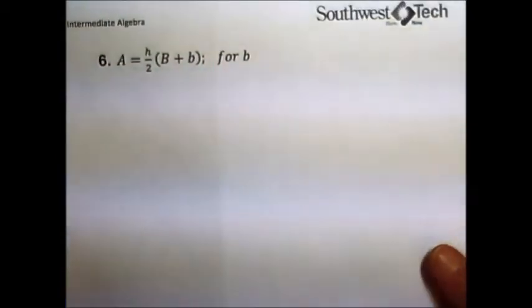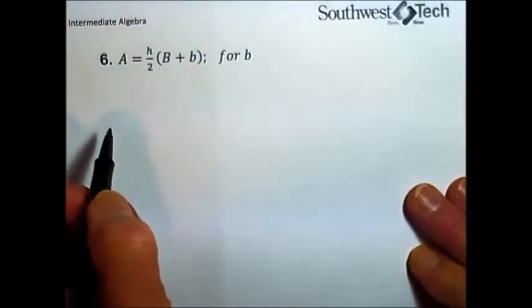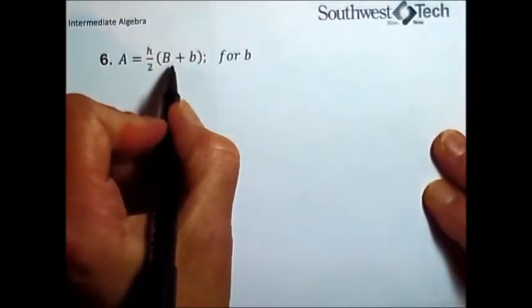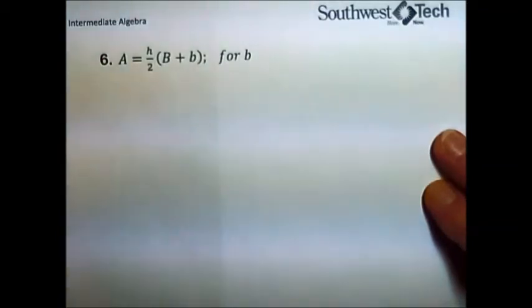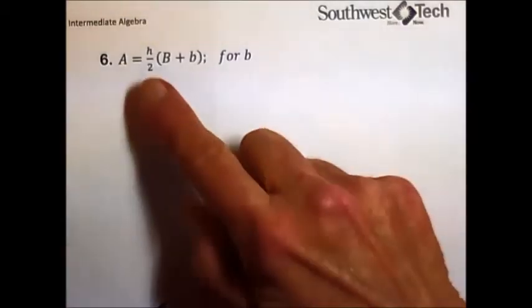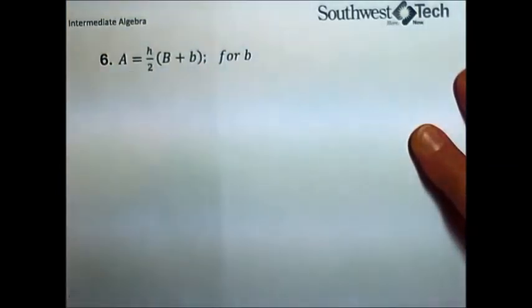The next problem I want to take a look at is this one. This is actually from geometry as well. It's the area of a trapezoid, and they're asking us to solve for b. In your order of operations, inside the parentheses is the first thing that we do, but when we're solving, it will be the last thing that we do. We essentially are working backwards through the order of operations. So I need to get rid of this fraction, and we could multiply both sides by the reciprocal of this fraction, and eliminate the h over 2 all in one shot.